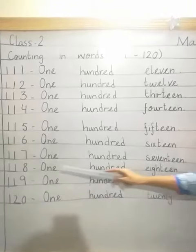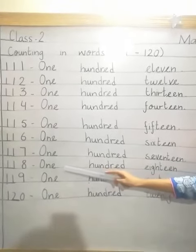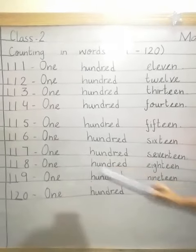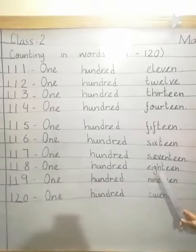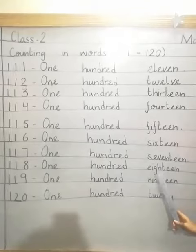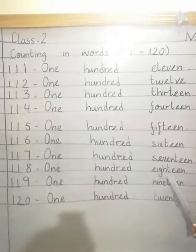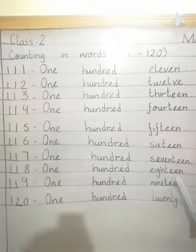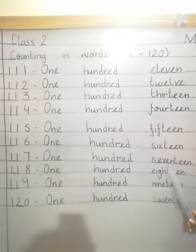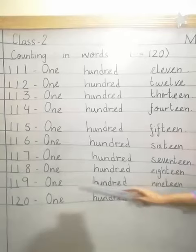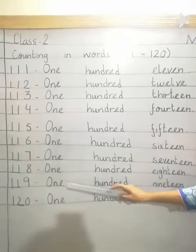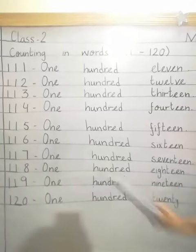118. What is the spelling of 18? E-I-G-H-T-E-E-N. 18. Then 119.